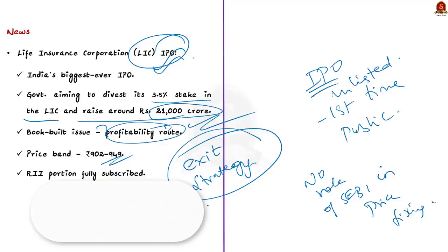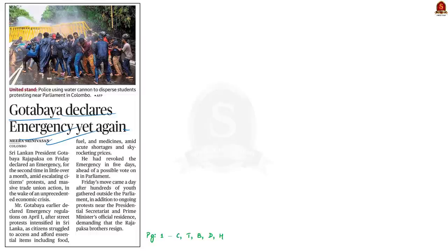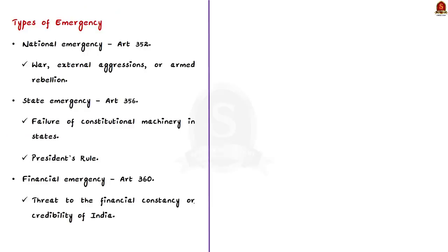Let's move on to the next news article. Mr. Gotabaya Rajapaksa has revoked the emergency five days ahead of a possible vote on it in parliament. The decision came a day after hundreds of youth gathered outside the parliament, in addition to ongoing protests near the presidential secretariat and prime minister's official residence. Let us use this opportunity and brush up the static part — emergency provisions in India.